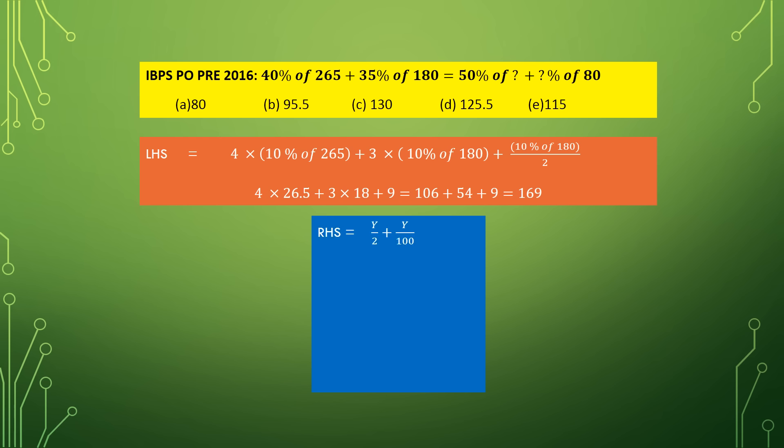On the right-hand side it is given: 50% of question mark plus question mark percentage of 80. There are two unknowns but both should have the same value Y. So it is 50% of Y plus Y percentage of 80. We can write 50% as 1 by 2, so the right-hand side is Y by 2 plus Y by 100 into 80. Taking Y as common gives Y multiplied by (1 by 2 plus 8 by 10), which equals Y multiplied by 13 by 10 equals 169, so Y equals 130.